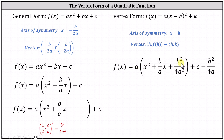We add b²/4a² inside the parentheses. Notice if we distribute the a, one factor of a simplifies out, giving us plus b²/4a, which we must also subtract outside to maintain equality. Now the quadratic inside the parentheses is a perfect square trinomial, meaning it factors into two equal binomial factors. The constant in the binomial factors is b/2a.